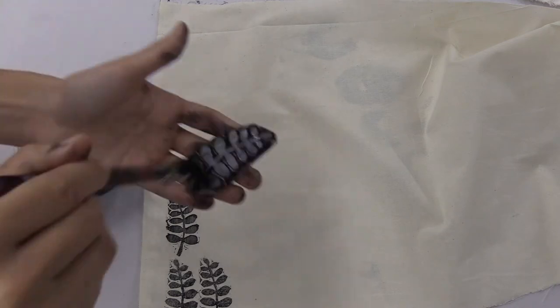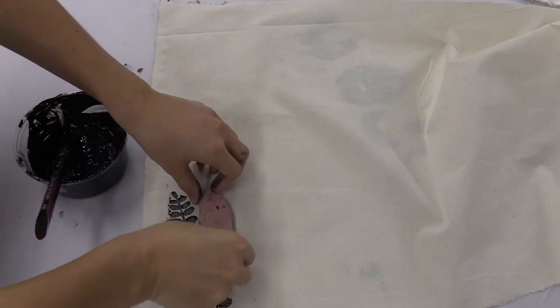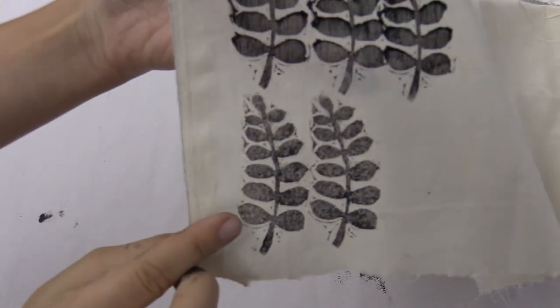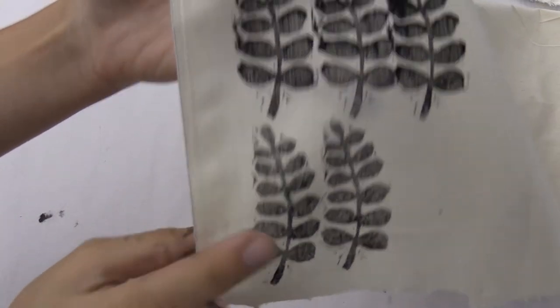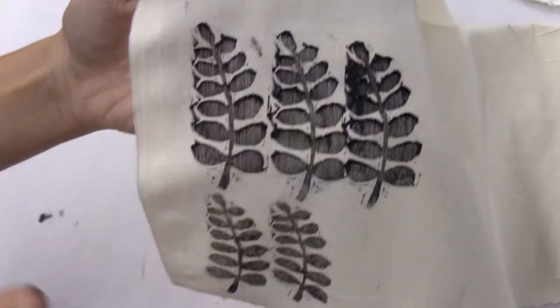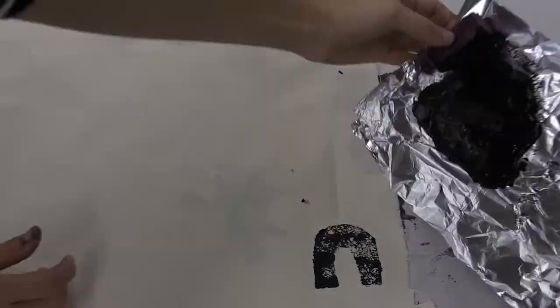Brush it on, put it face down, and apply pressure. You can see the difference in results from using the foam roller versus brushing it on. This is what happens if you use too much paint.